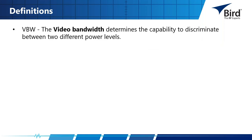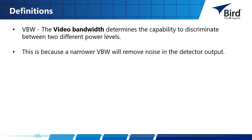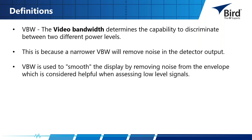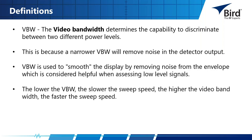VBW, or video bandwidth, determines the capability to discriminate between two different power levels. A narrower video bandwidth removes noise in the detector output. Video bandwidth is used to smooth the display by removing noise from the envelope, which is helpful when assessing low-level signals. The lower the VBW, the slower the sweep speed; the higher the video bandwidth, the faster the sweep speed.